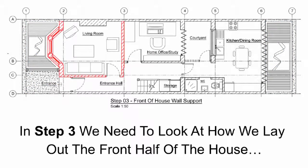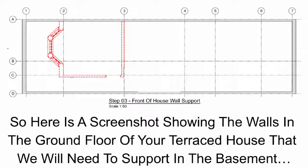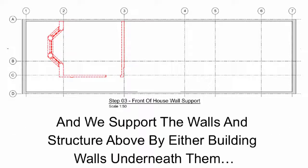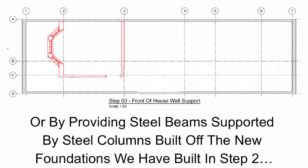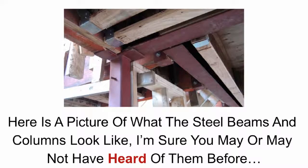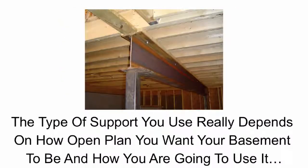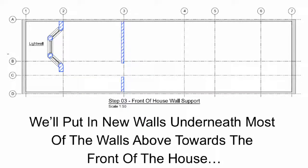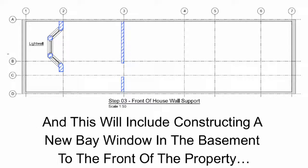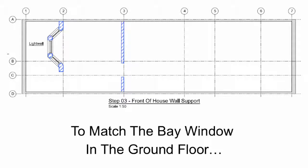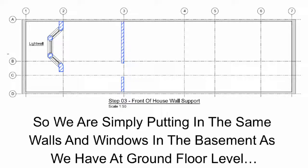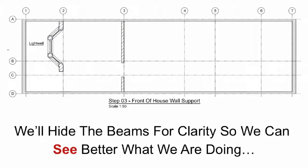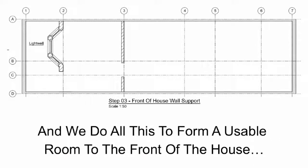In step 3 we need to look at how we lay out the front half of the house. Here is a screenshot showing the walls in the ground floor that we will need to support in the basement. We support the walls and structure above by either building walls underneath them or by providing steel beams supported by steel columns built off the new foundations from step 2. In this example we do a mixture of both — we put in new walls underneath most of the walls above towards the front of the house, including constructing a new bay window in the basement to match the one at ground floor. We put in some beams for the rest, then hide them for clarity, to form a usable room to the front of the house.